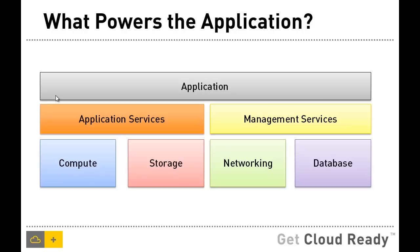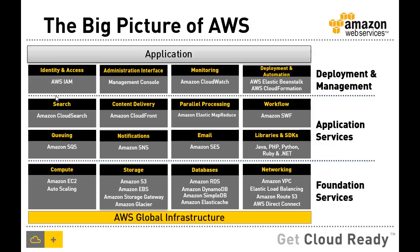Whether you are developing your application on physical infrastructure, virtual infrastructure, or even on the cloud, you will have to deal with the four building blocks. Comparing this with Amazon Web Services, we have exactly the same layers. At the bottom of the stack, we have AWS Global Infrastructure that exposes compute, storage, databases, and networking as the foundational services. On top of that, we have application services followed by deployment and management services.